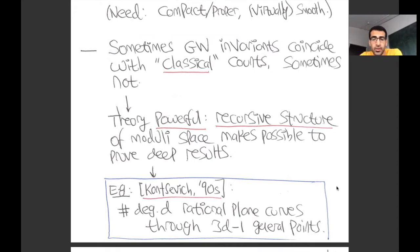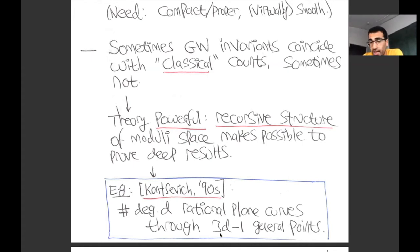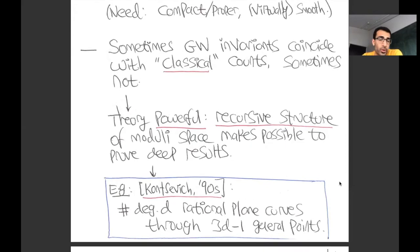Kontsevich's theorem addresses rational plane curves of degree D, which move in a 3D−1 dimensional family, so you cut down by imposing passage through 3D−1 general points. For D=1 it's just lines through two points. For D=3 it asks for rational cubics through eight points—the answer is 12. This characteristic number question had been considered for a long time; up until the 80s or 90s we only knew the answer up to about D=6 or 7. Then Kontsevich, using stable maps, gave a complete recursive formula in all degrees, which basically killed the whole problem.